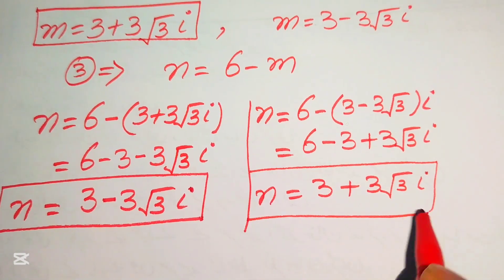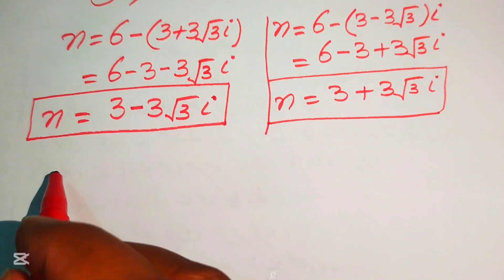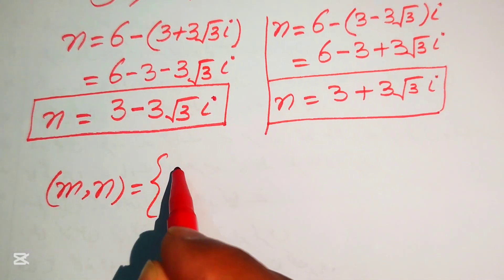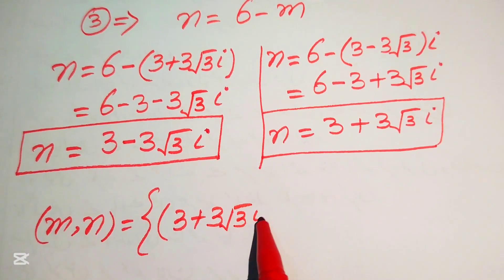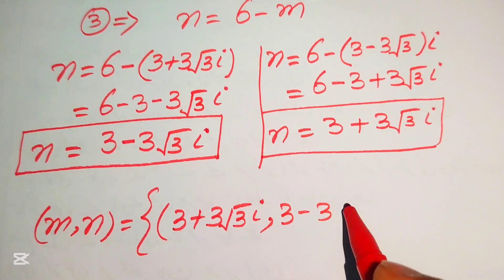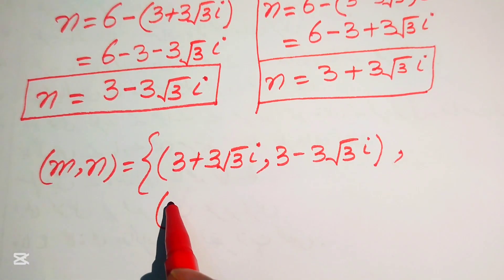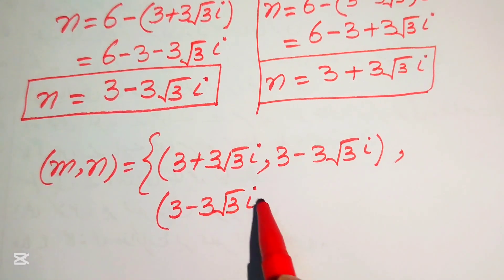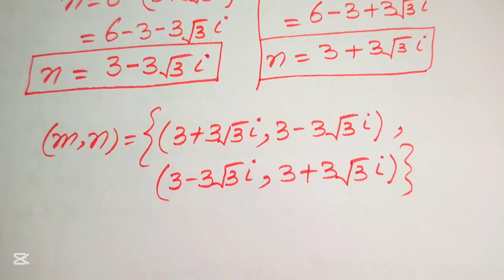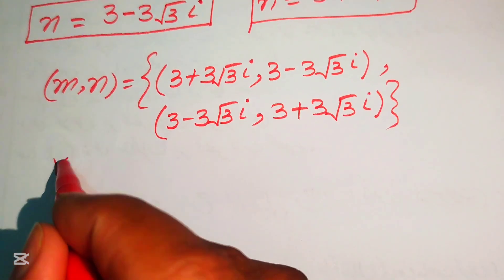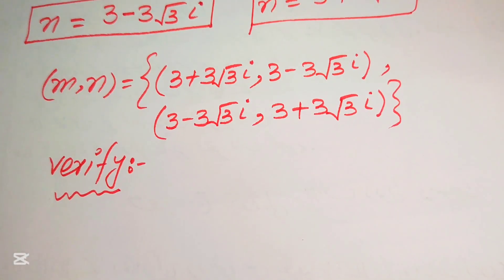This is the value of n corresponding to the second value of m. Finally, we have two solution sets: the first solution is m equals 3 plus 3 root 3 iota and n equals 3 minus 3 root 3 iota. The second solution set is m equals 3 minus 3 root 3 iota and n equals 3 plus 3 root 3 iota. Now we verify these solutions; I will verify the first solution and leave the second for you to verify yourself.